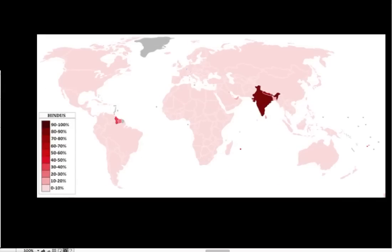Then we're going to jump over and take a look at Hinduism. We're going to take a look at the basic physical geography of the Indus Valley, some major cities of Indian civilization, the caste system, and the basic tenets of Hinduism.